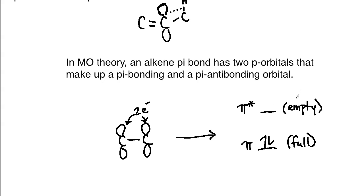The antibonding orbital is empty — it has no electrons and is vacant. This empty pi antibonding orbital is really where hyperconjugation takes effect and helps stabilize the pi p orbitals. That explains why stability increases as we increase the number of alkyl substituents: hyperconjugation stabilizes those p orbitals, particularly the antibonding pi orbital in molecular orbital theory.